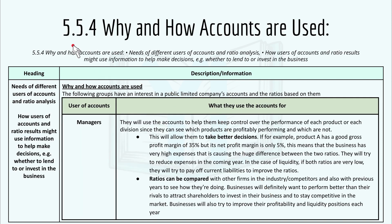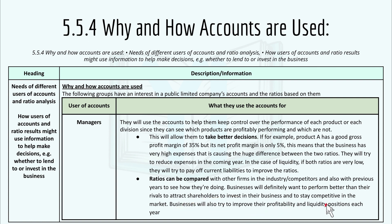Moving to 5.5.4 — why and how accounts are used. Managers will use accounts to help keep control over the performance of each product or division, seeing which products are performing profitably and which are not. This allows them to take better decisions. Ratios can be compared with other firms in the industry or competitors, and with previous years. Businesses will also try to improve their profitability and liquidity positions each year.